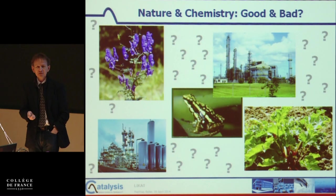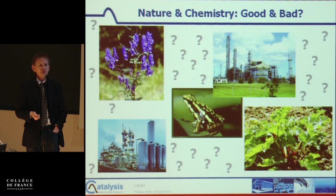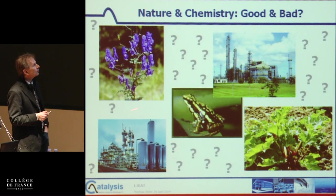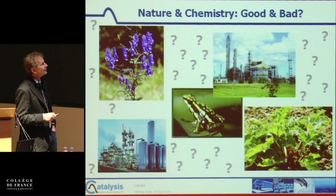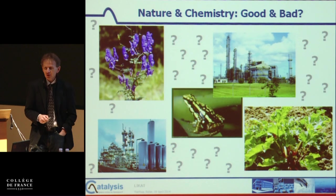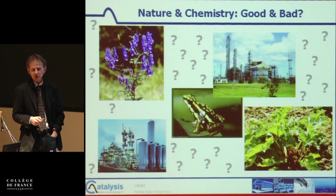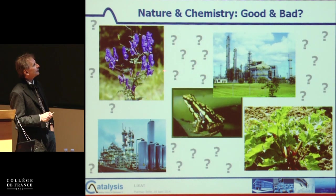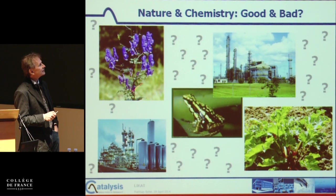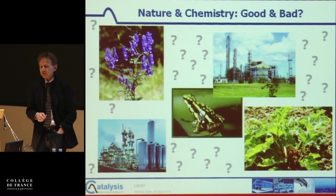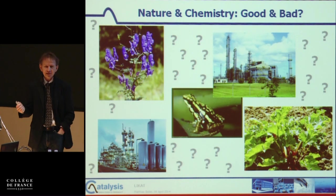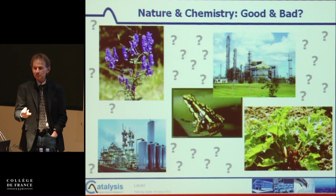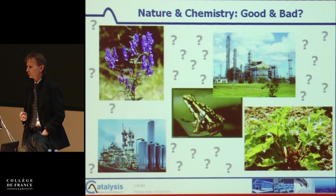Looking at these various pictures and asking what is good and what is bad — most people would say this is good but this is bad. Of course, I chose these pictures by intention and the opposite is true. You might know this is aconite — a nice flower, but very toxic. Don't put it in your garden when you have small children.